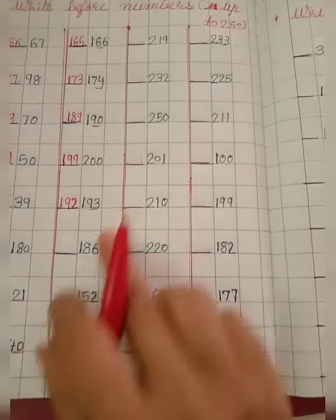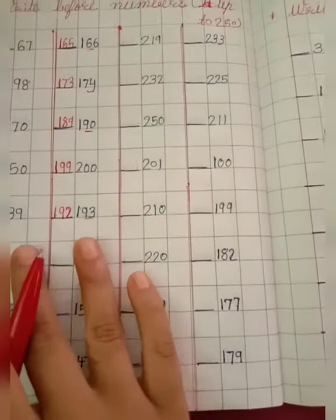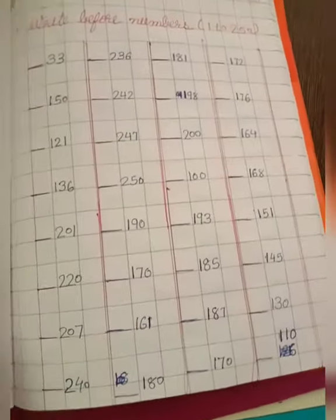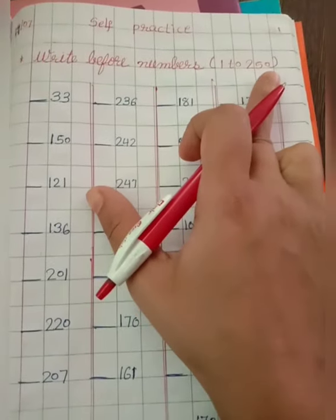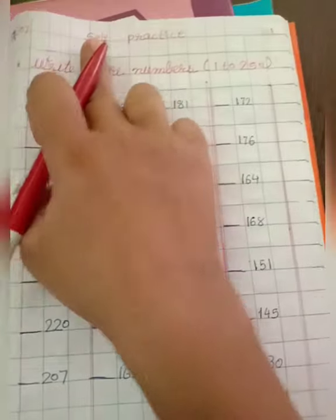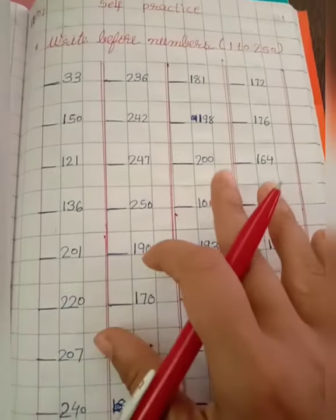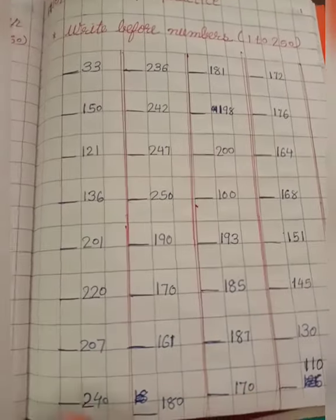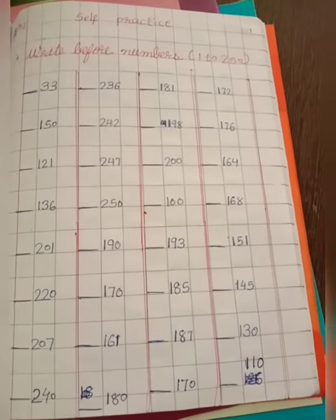Now, you will complete this work by yourself. Okay, and I will send you one another worksheet, which is up to 250. This is for self practice, and you will do it in this worksheet in your CW book. Okay, this is for self practice, and you will also do this work in your CW book.